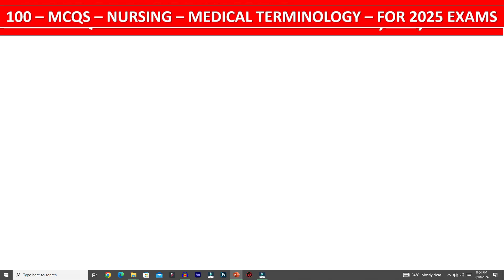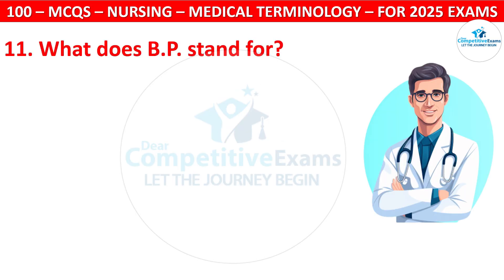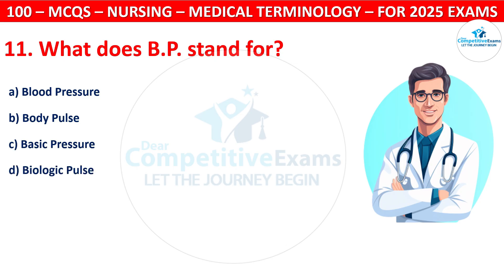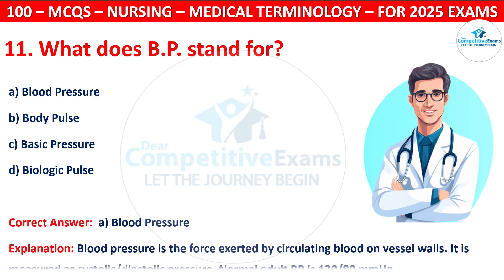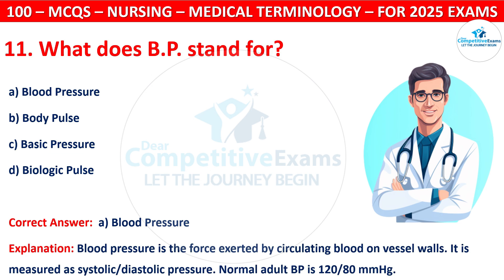Question 11: What does BP stand for? Options are: Blood Pressure, Body Pulse, Basic Pressure, or Biologic Pulse. The correct answer is A, that is Blood Pressure. Blood pressure is the force exerted by circulating blood on vessel walls. It is measured as systolic and diastolic pressure. Normal adult BP is 120/80 mmHg.